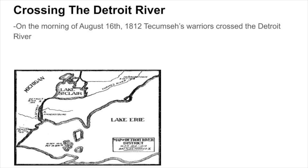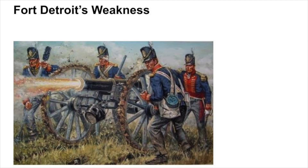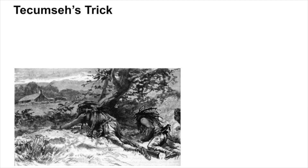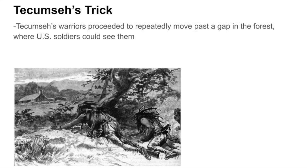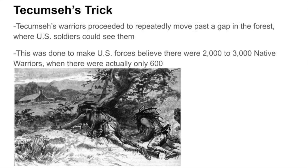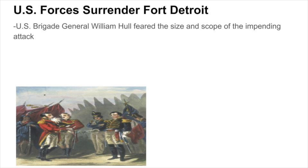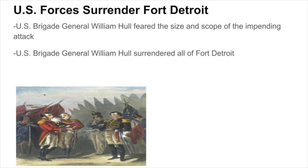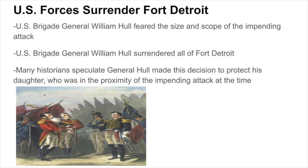Then on the morning of August 16th, 1812, Tecumseh's warriors crossed the Detroit River. They were quickly followed by three of Major General Isaac Brock's brigade units. Brock advanced to the rear of Fort Detroit, where defenses were weakest. Tecumseh's warriors then proceeded to repeatedly move past a gap in the forest where U.S. forces could see them. This was done to make U.S. forces believe there were 2,000 to 3,000 Native American warriors, when in actuality there were only 600. U.S. Brigadier General William Hull feared the size and scope of the impending attack and in turn surrendered his entire fort. Many historians speculate Hull made this decision to protect his daughter, who was in the proximity of the impending attack at the time.